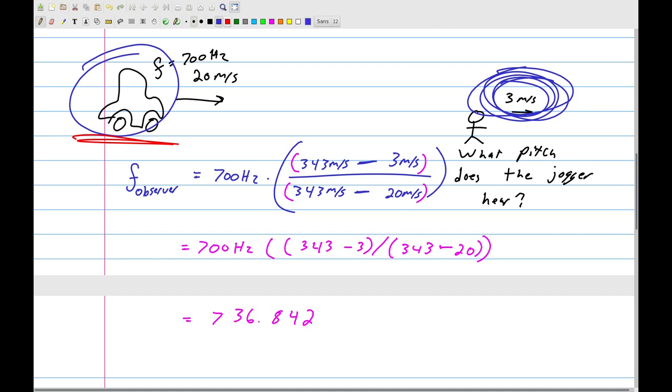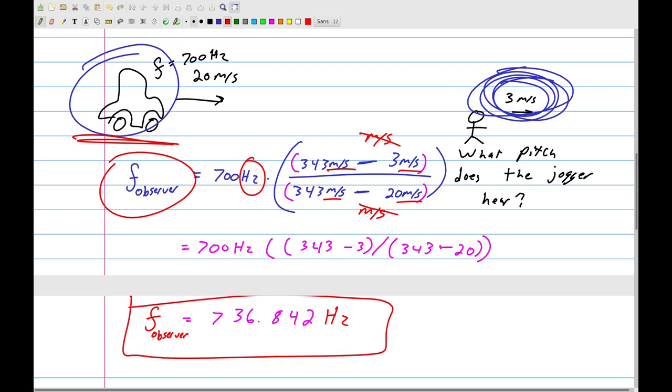All right. So what are the units for this answer? Well, I can tell here I have meters per second minus meters per second is just meters per second on top. I have meters per second minus meters per second. I just have meters per second on bottom. That and that go away. And we're left with one unit, which is hertz. And that makes perfect sense because this is a frequency, the frequency the observer hears. All right. So he hears a frequency of 736.842 hertz.